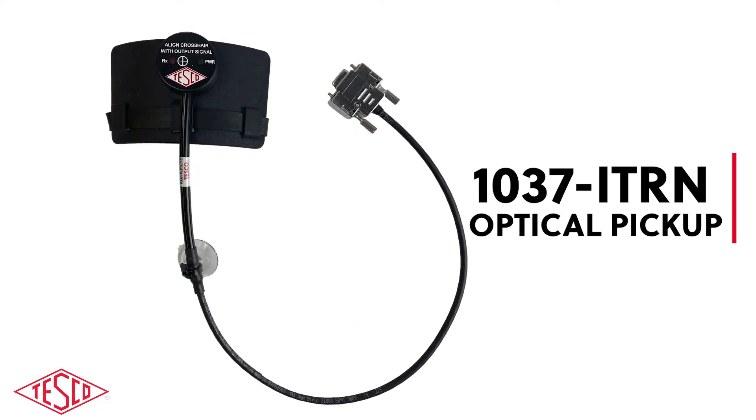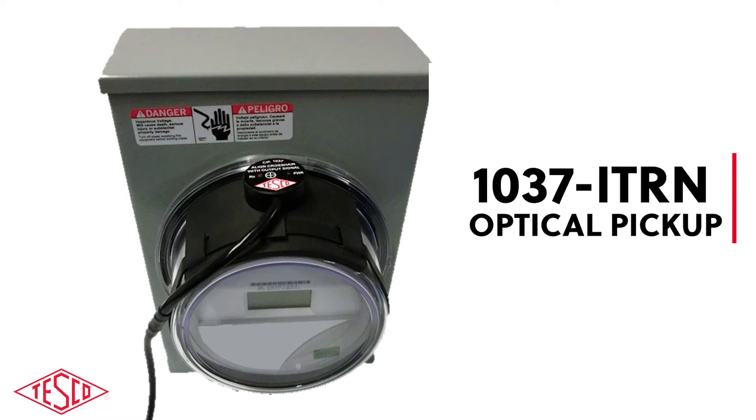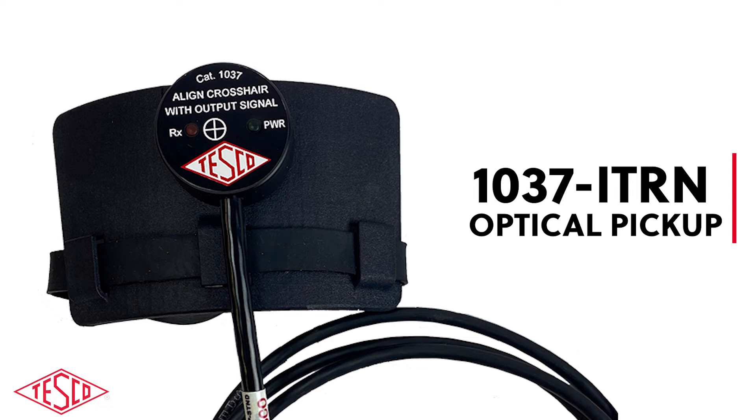So whether you have a weak pulse or a dirty cover or even a brand new meter, the 1037 ITRN senses those infrared pulses located at the 12 o'clock position on ANSI compliant meters for complete and automatic testing.